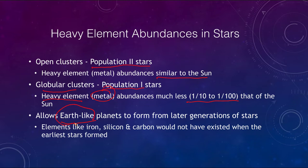This allows us to determine where can we form Earth-like planets. Planets like the Earth could not have formed from the earliest generations of stars. The metal abundances are very low, and if there was not enough carbon, iron, silicon, and carbon to be able to form planets like the Earth, then we would not have been able to form Earth-like planets from those very earliest generations of stars. However, the later ones, the population one stars, would have been able to form these abundances and form planets much like our own Earth.